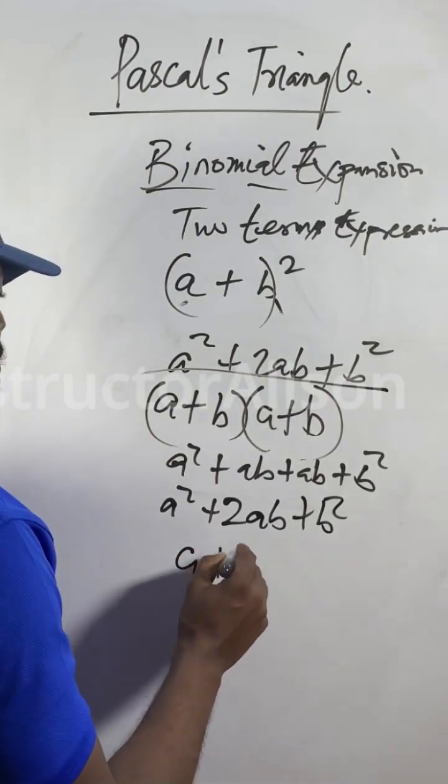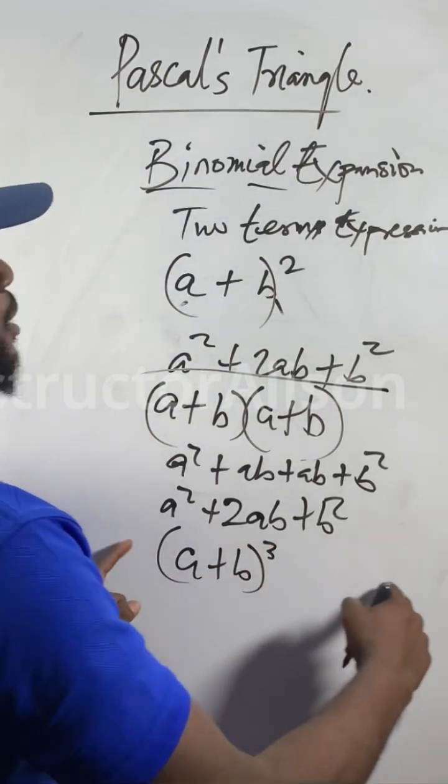What if they increase to (a plus b) cube? Normally you can duplicate that into three, two, one.